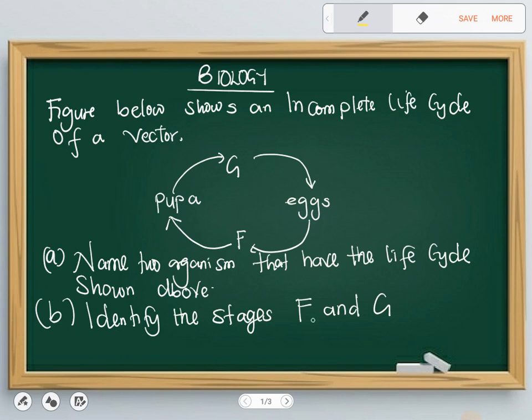Part B: Identify the stages F and G. Now if you know the life cycle of a housefly or mosquito, you must be able to recognize these stages all the way from the egg stage. Where do we go? We go to the larva stage, from the larva to the pupa stage, from the pupa we go to the final stage which is the adult stage. So F, from the egg we go to the larva.